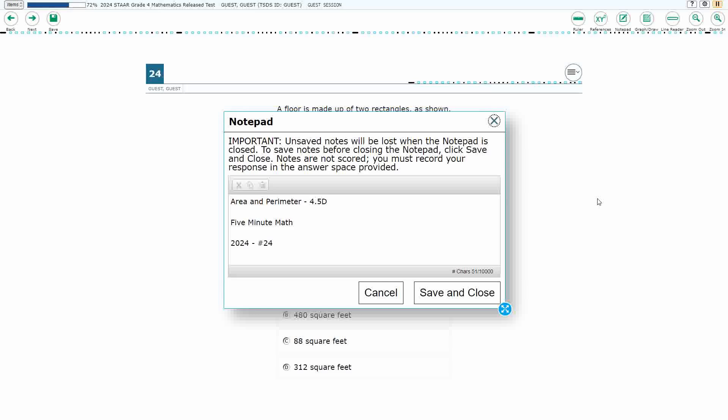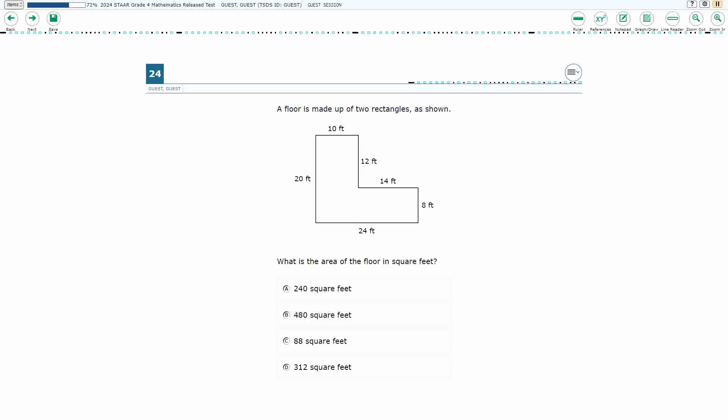Hello and welcome to 5-Minute Math. Today we are looking at the fourth grade concept of area and perimeter. This is standard 4.5D in the great state of Texas and we are using item number 24 of the 2024 released STAAR test.